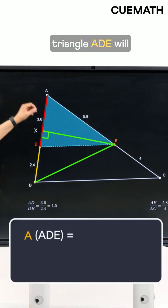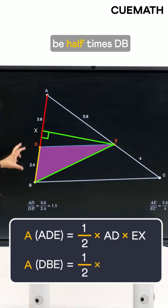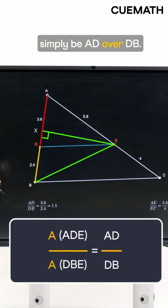The area of triangle ADE will be half times AD times EX and the area of triangle DBE will be half times DB times EX. So the ratio of the two areas will simply be AD over DB.